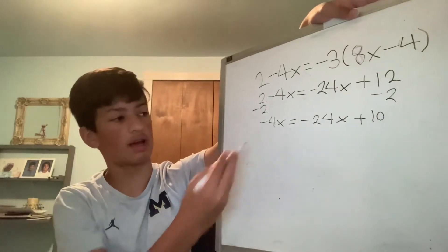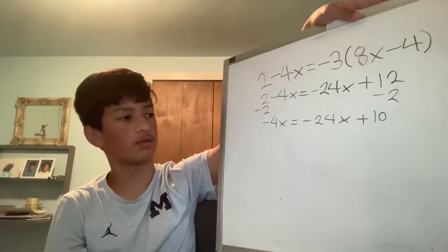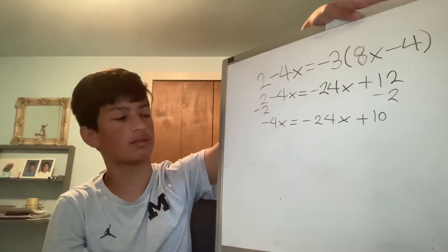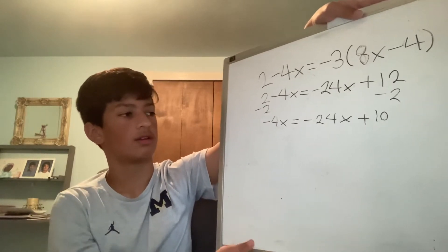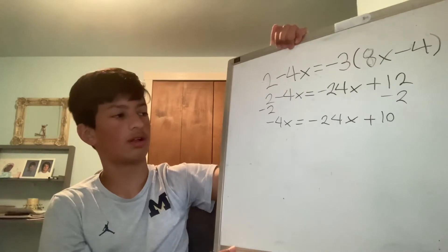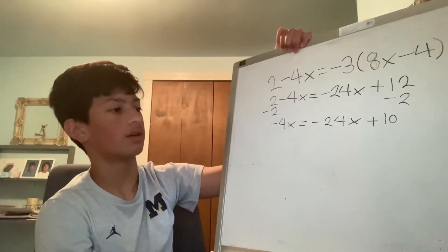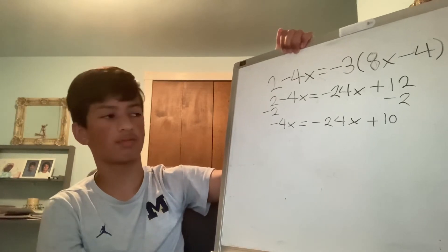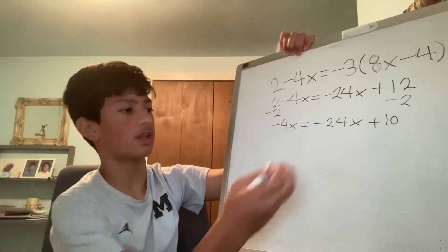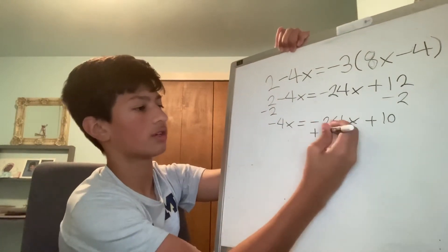My equation now reads negative 4x equals negative 24x plus 10. To further isolate the variable, I have to collect the terms onto one side. I can do this by using the addition property of equality and add 24x to both sides.